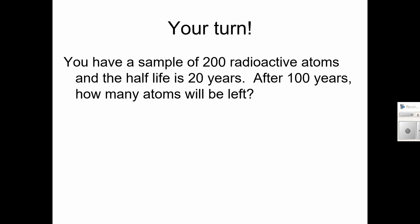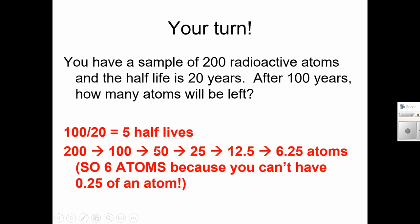One more example for you to do. You've got a sample of 200 radioactive atoms. The half-life is 20 years. So after 20 years, only 100 are going to be left. So keep going with that. After a total of 100 years, how many atoms will be left? And what I mean by how many atoms? I mean how many radioactive atoms. So pause the video and see if you can solve this. It's 100 divided by 20, that's 5 half-lives. So after one half-life, there's 100 left, and then there's 50 left, and then there's 25, and then there's 12.5, and then there's 6.25 left. So we would round to 6, because you can't have a quarter of an atom. So after 100 years, 6 of those original radioactive atoms are remaining.